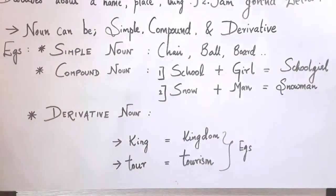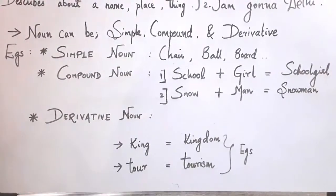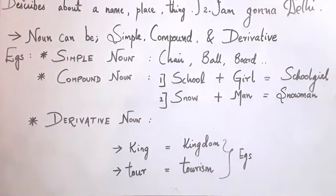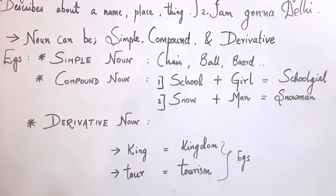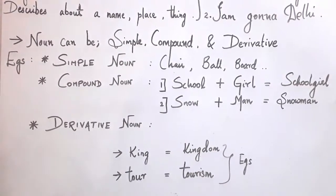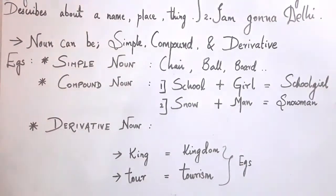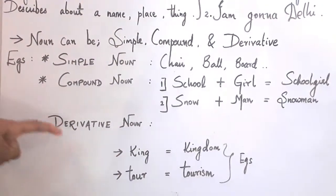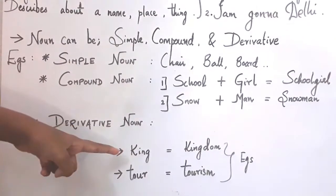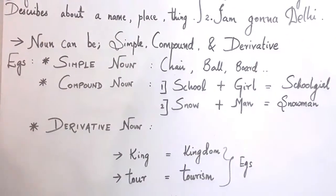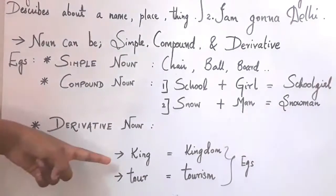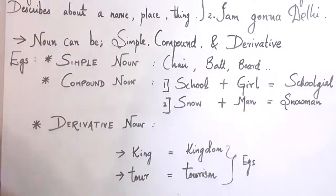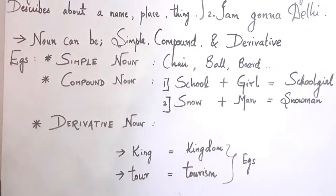The last one is the derivative noun. What is a derivative noun? A derivative noun is something that is derived from another word and joined together to form a new one. For example, you have the word 'king,' and remember that in derivative nouns, the words are added with a suffix. For example, king plus D-O-M becomes kingdom.